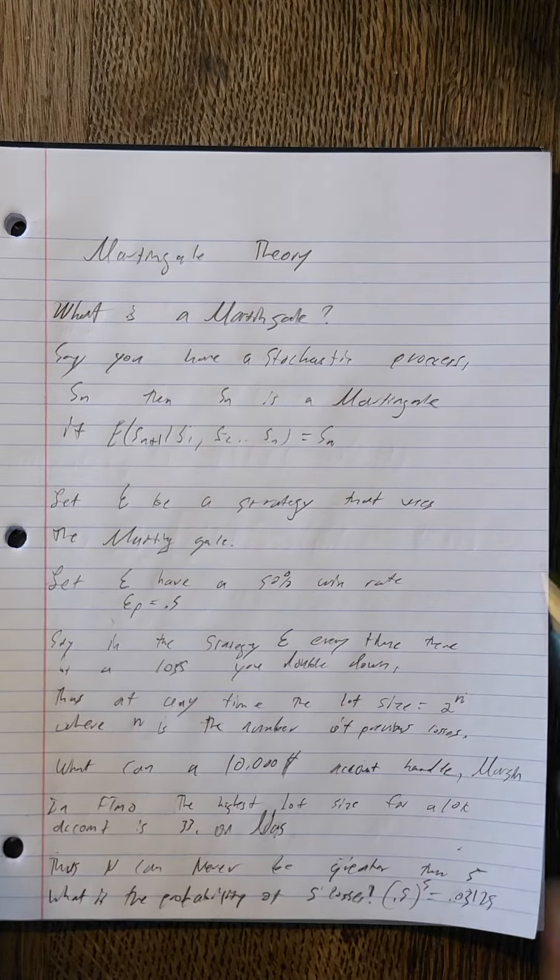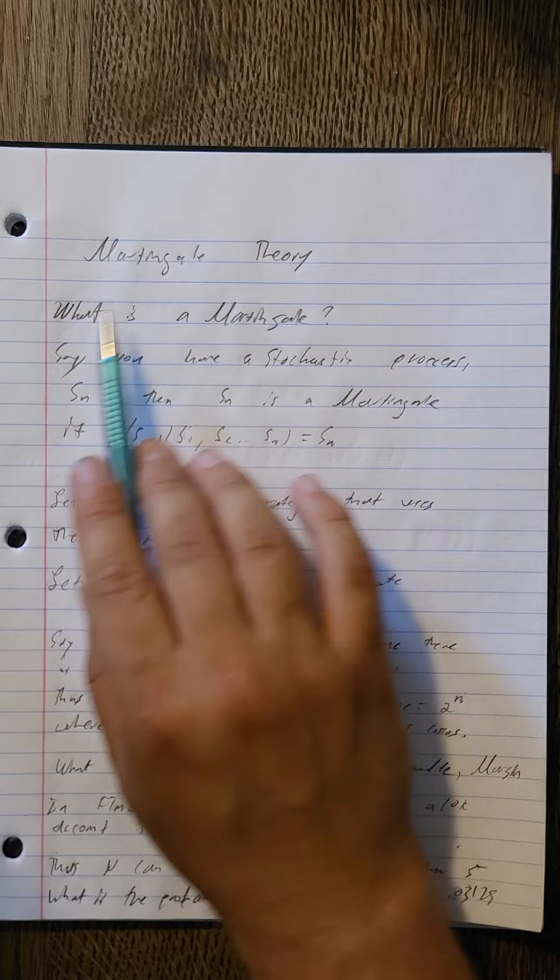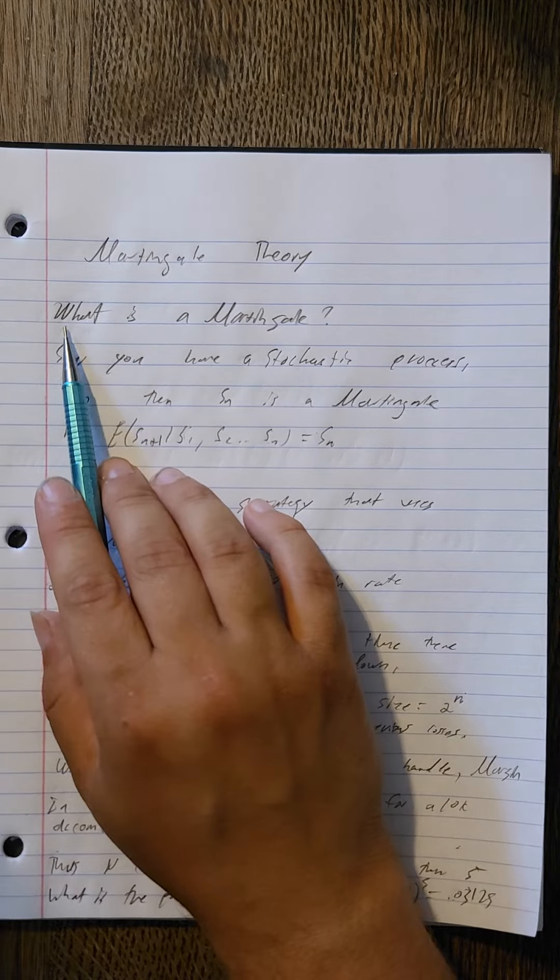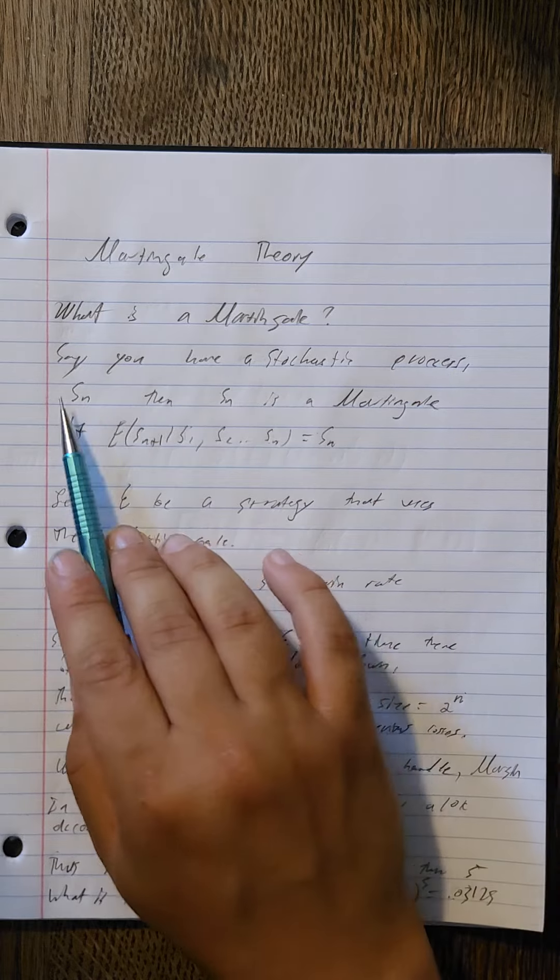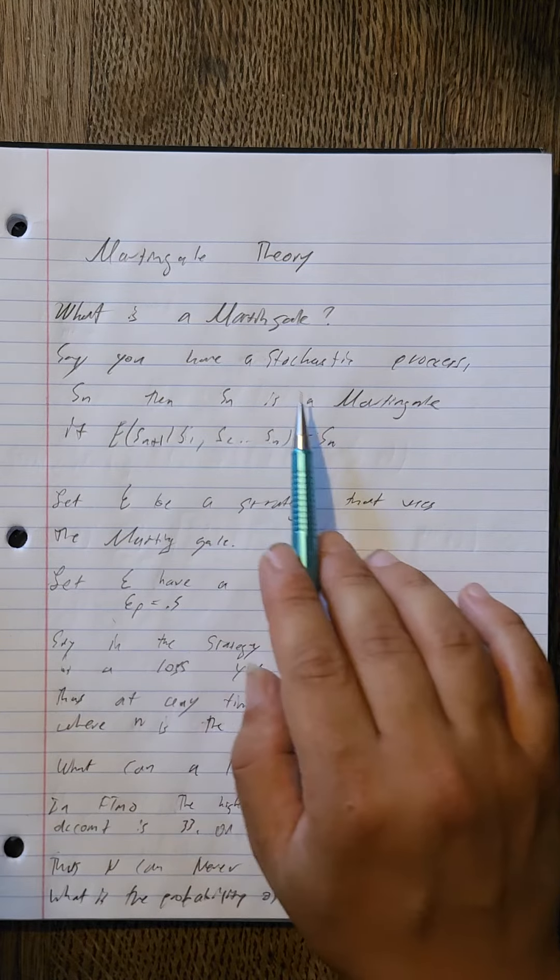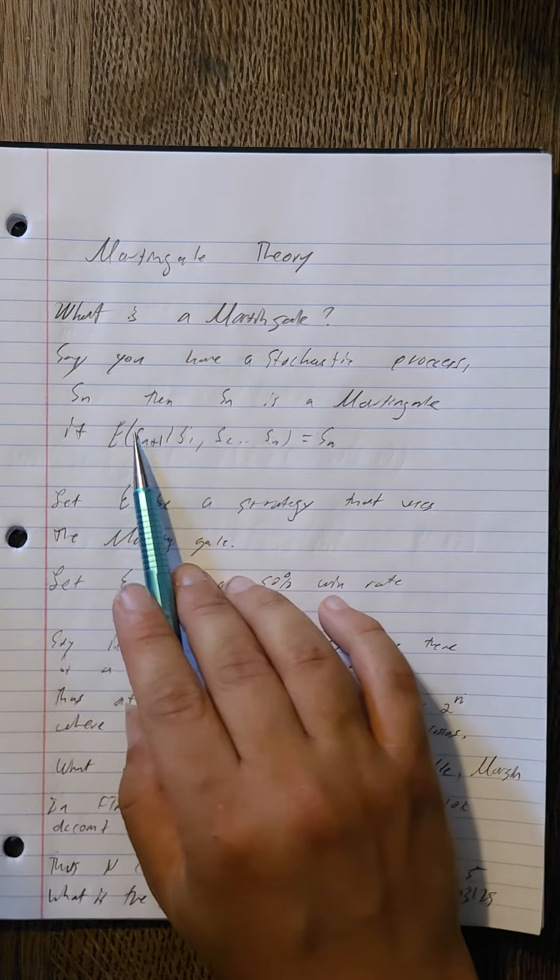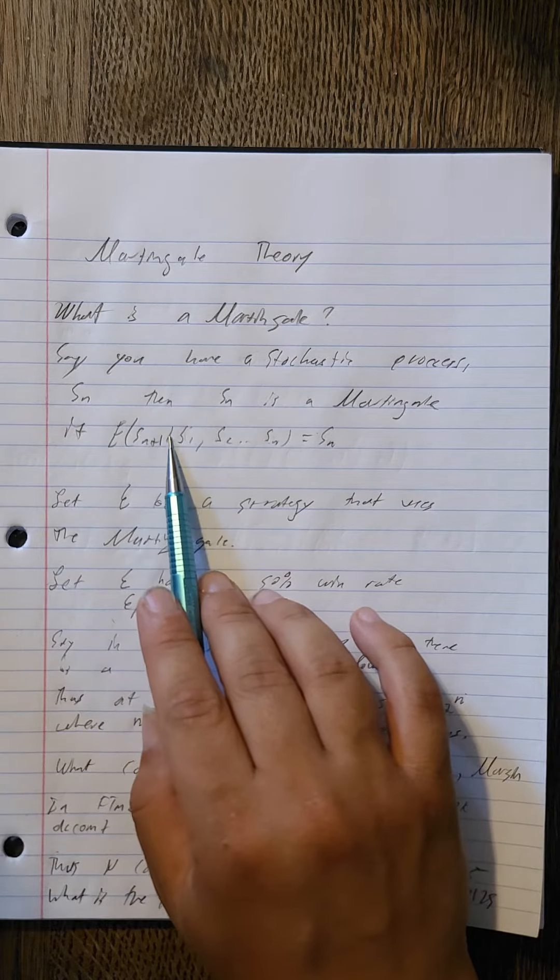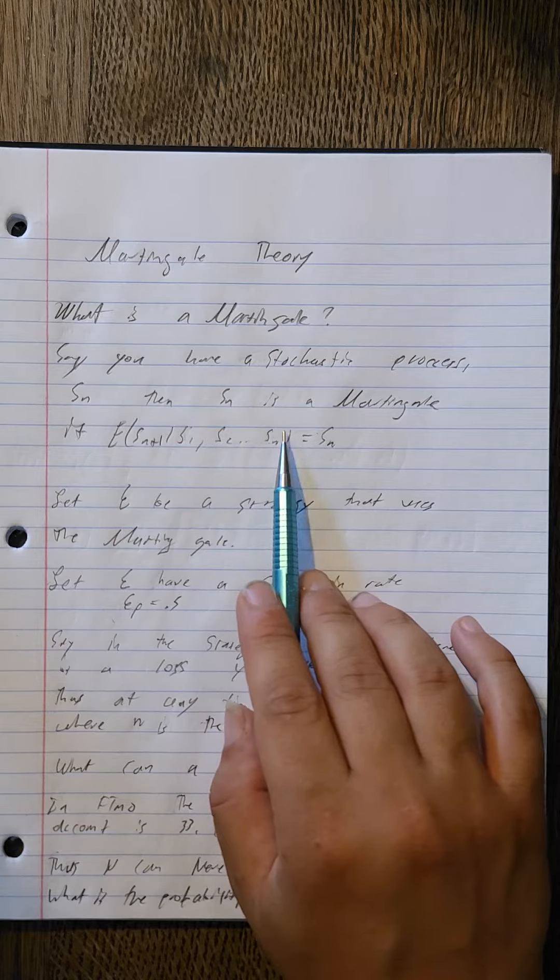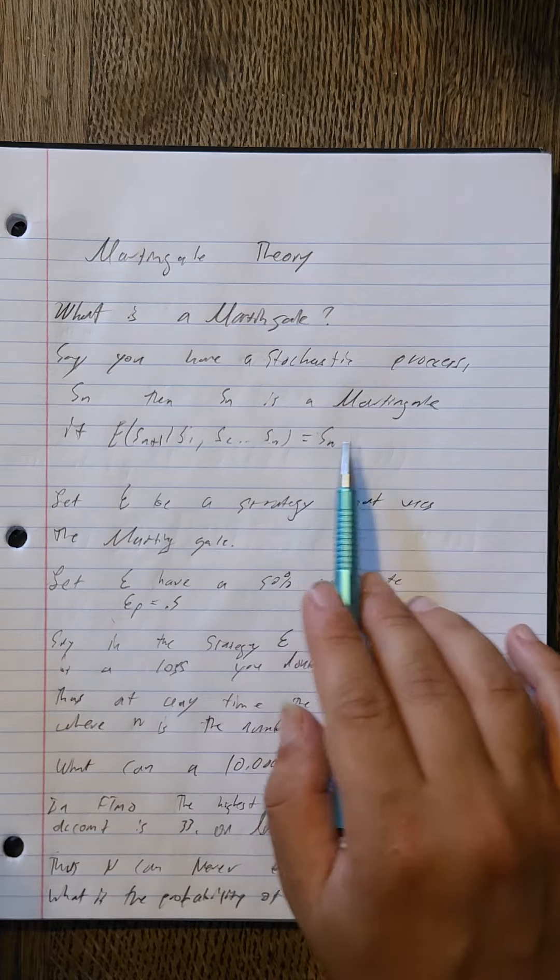Hello and welcome to a new video on martingale theory. This video we're going to ask what is a martingale. Say you have a stochastic process S of n, then S of n is a martingale if the expected value of S_{n+1} given S_1, S_2, all the way up to S_n equals S of n.